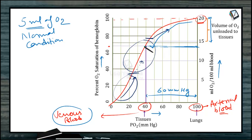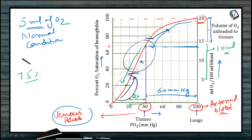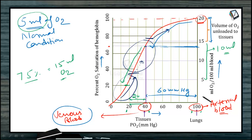From the steep portion of the curve, only a 20 mmHg pressure change causes a large fall in oxygen from 15 ml to 5 ml — a release of 10 ml. During strenuous exercise, tissues get 75% of the oxygen from blood — 15 ml — as pressure falls from 100 to 20 mmHg. Under normal conditions, pressure falls from 100 to 40 mmHg and delivers only 5 ml. Moving down the curve is dissociation; moving up from bottom to top is association.